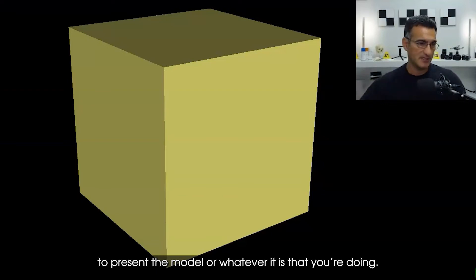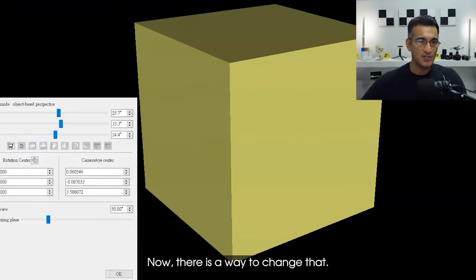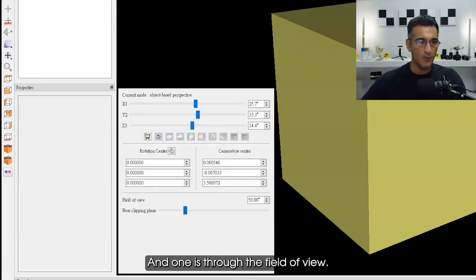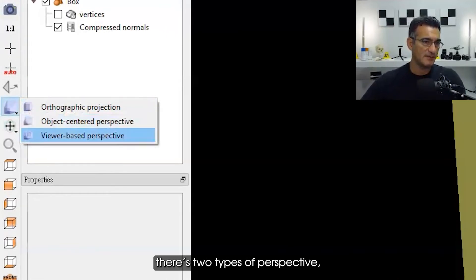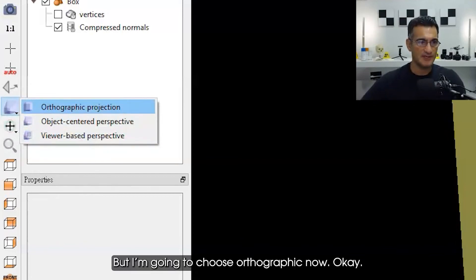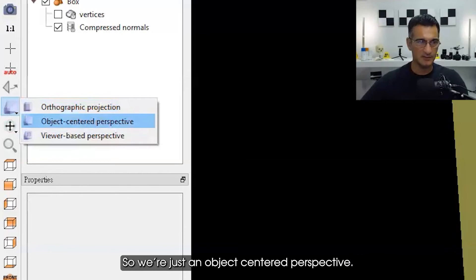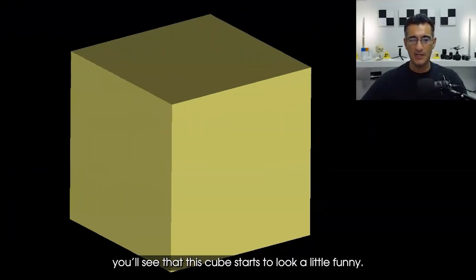Now there is a way to change that - one is through the field of view, but before I do that I'm just going to use the default setting here. So there's orthographic and perspective. There's two types of perspective but they're kind of the same. I'm going to choose orthographic now. We're just on object-centered perspective. If I go to orthographic you'll see that this cube starts to look a little funny.